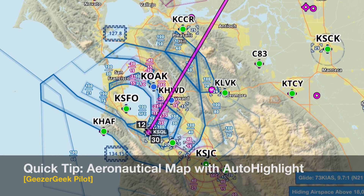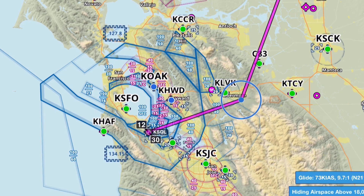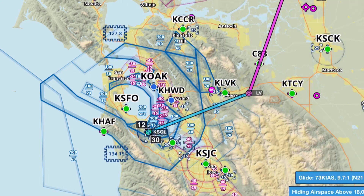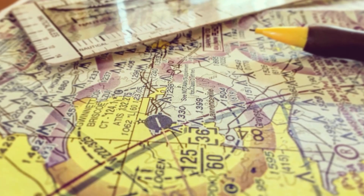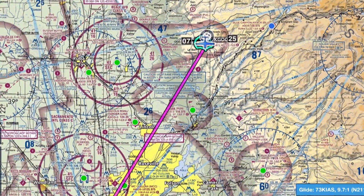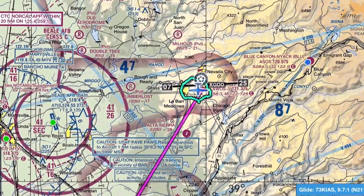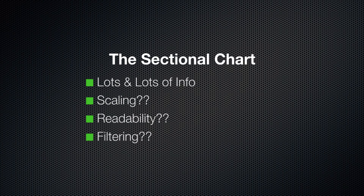Thanks for joining us for this quick tip on what seems a somewhat undiscovered ForeFlight feature. Most all of us started our flying with a sectional chart, and as we transitioned to an electronic flight bag it was a comfort to have those maps available — even zoomable and auto-stitched for us. The sectional chart provides a wealth of information but might just have some major downsides.